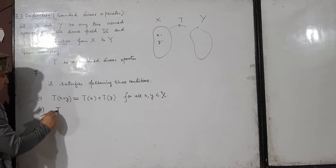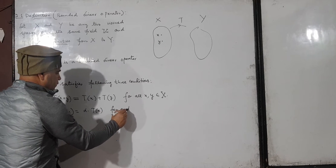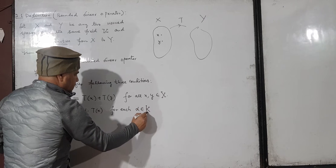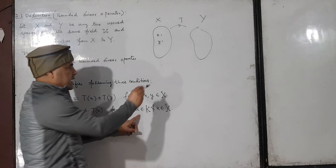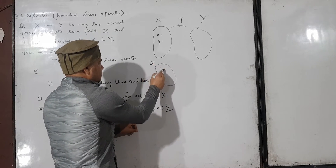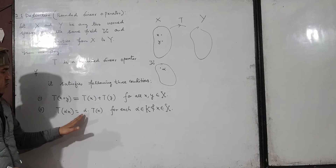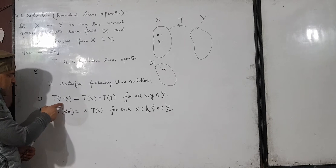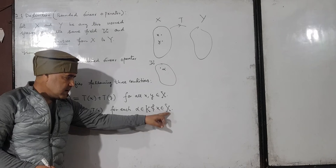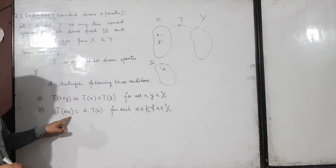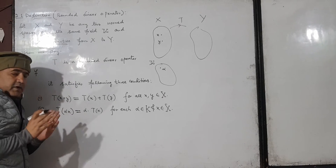The second condition: T(αx) = α·T(x) for each α in K and x in X. This condition says: whenever you pick an element α from the field K and an element x from the norm space X, then either you multiply them first and then take the image, or you take the image of x first and then multiply by α. In both cases, the answer remains the same.